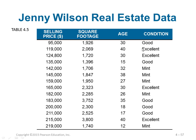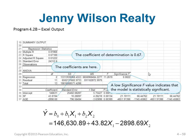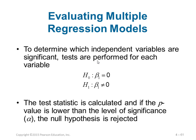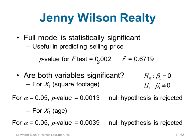For example, a company selling houses has prices based on size and age of the house. ŷ is the predicted selling price, x1 is the square footage of the house, x2 is the age of the house, and b1, b2 are the respective slopes. Similar to simple linear regression, we evaluate using the p-value for the F-test and R². The key difference in multiple regression is that in the F-test we check whether all coefficients are 0 at the same time. For each variable separately: H0: βi = 0, H1: βi ≠ 0 — reject H0 if p-value < α.